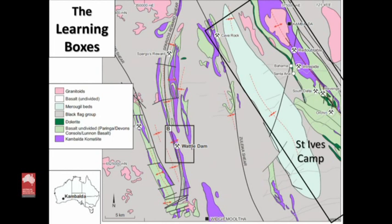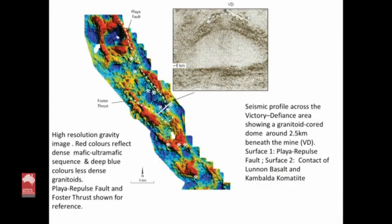I'm going to start at the Sunites camp and end up at the high-grade Wattle Dam deposit. Everybody is working on this, basically, including the research that we're doing. Here are the learning boxes of the Sunites camp and then over to Wattle Dam, which is 20–30 kilometres west of the Sunites camp. All this research has been done in the last decade and a half and is pretty much wound up now. There are lots of players involved, and I acknowledge them on the first slide.